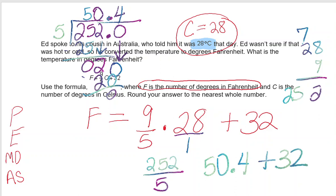And then I can add 32. That's the same thing as 32.0. 50.4 plus 32.0 is 82.4. In the problem it says to round your answer to the nearest whole number, and since 0.4 is less than 0.5, my final answer to the nearest whole number would be 82 degrees Fahrenheit. So when it is 28 degrees Celsius, it is 82 degrees Fahrenheit.